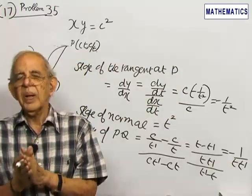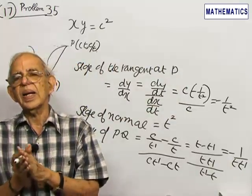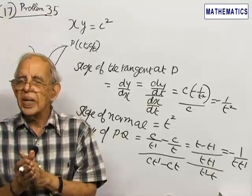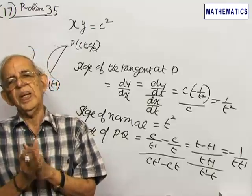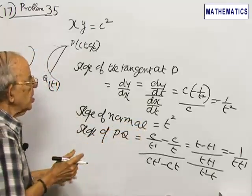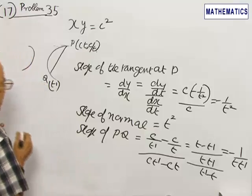We have calculated the slope of PQ in two different ways: one as normal at P, another as chord joining the two points P and Q. The two slopes should be equal.